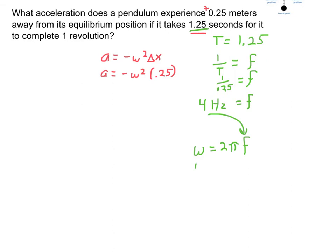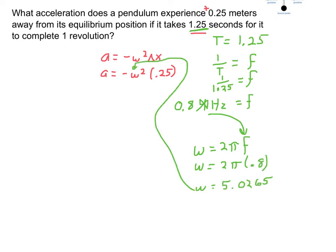Now that I've calculated the frequency — I took the period and substituted that in; I made a math error here, this should be 1.25, leaving me at 0.8 hertz — I can substitute into the angular frequency equation and calculate what the angular frequency is going to be, which is needed to calculate the acceleration. I didn't round down here because angular frequency isn't the final answer — I'm looking for the acceleration.